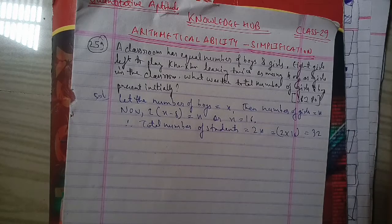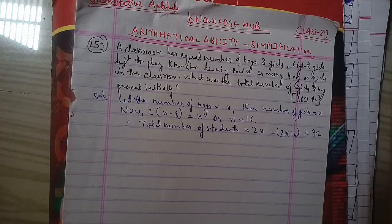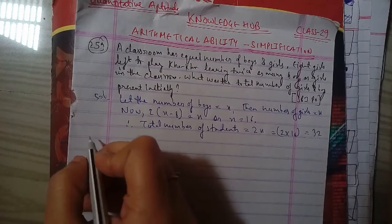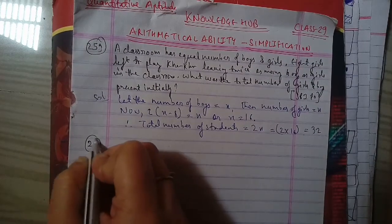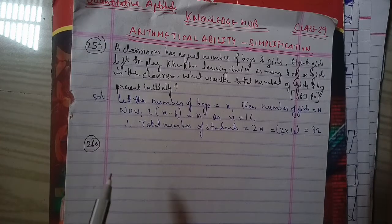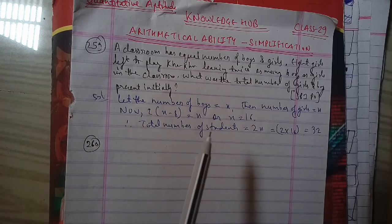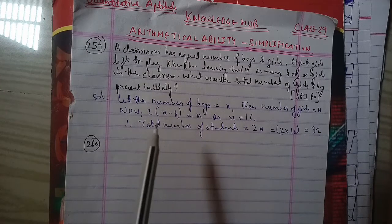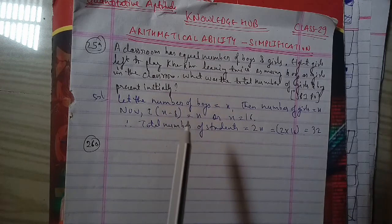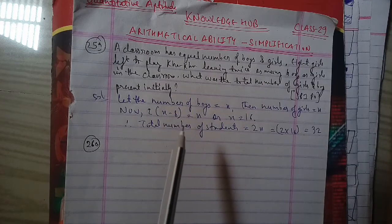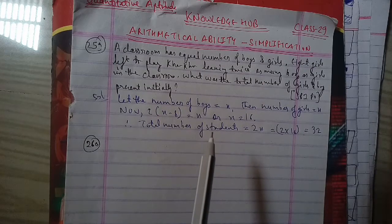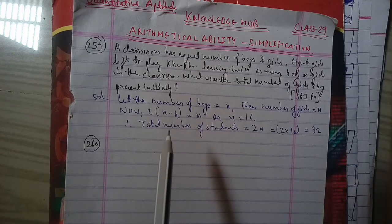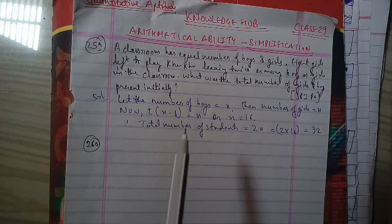The total number of students is 32. Now moving to question 260: after distributing sweets equally among 25 children, 8 sweets remain. Had the number of children been 28, 22 sweets would have been left after equally distributing. What was the total number of sweets? Options: 328, 348, 358, or data inadequate.